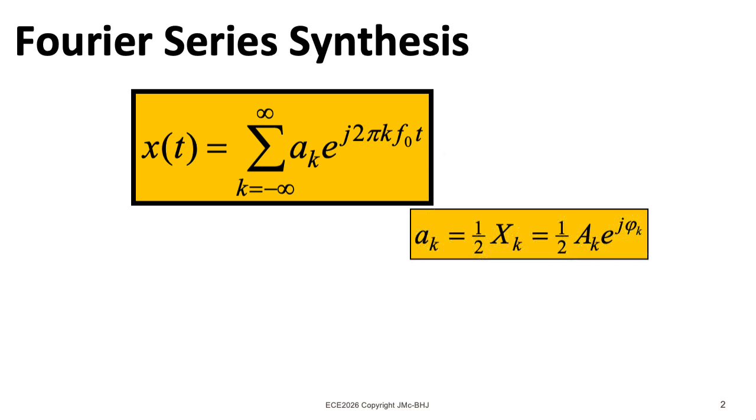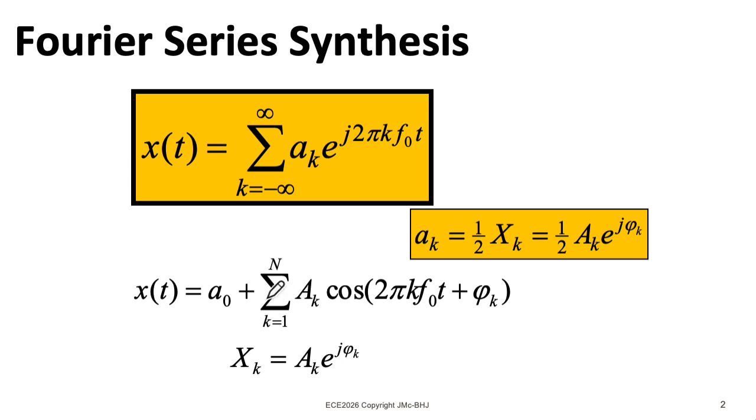Now, if your signal x of t is real, then you can rewrite this sum using Euler's formula in terms of a sum of cosines with different amplitudes and phases. And then we have this DC term out in front, which is a0. Now, when you're going from little a_k to big A_k, you need to remember to multiply by two, but that doesn't apply to a0.